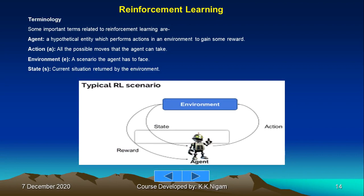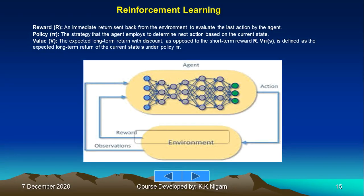Key terminology: Agent — a hypothetical entity that performs actions in an environment to gain reward. Action (A) — all possible moves the agent can take. Environment (E) — the scenario the agent faces. State (S) — the current situation returned by the environment. Reward (R) — an immediate return from the environment evaluating the last action. Policy (π) — the strategy the agent uses to determine the next action based on the current state.